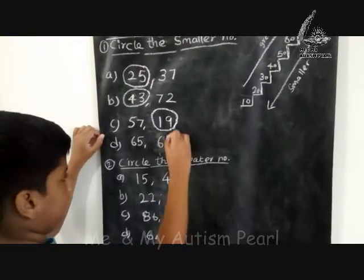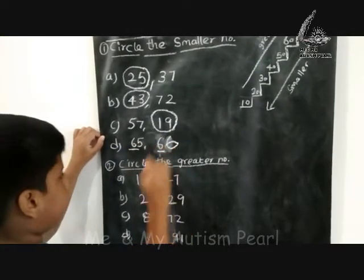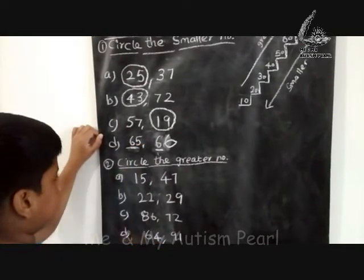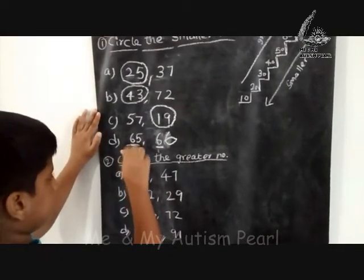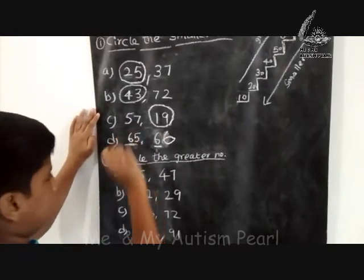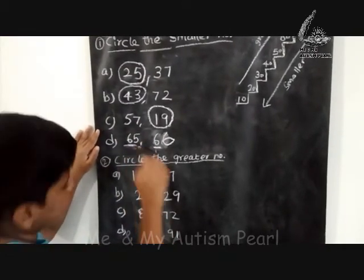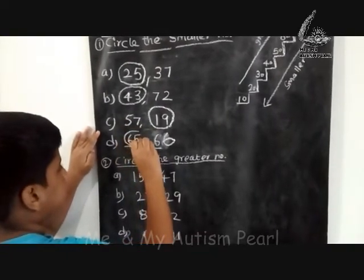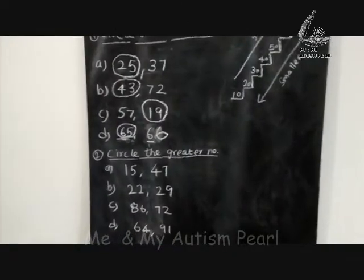65 — both are the same tens, so we compare the ones. 65 and 66 are the same tens, so we compare them. Hence 65 is the smallest number because 65 has 5 ones.